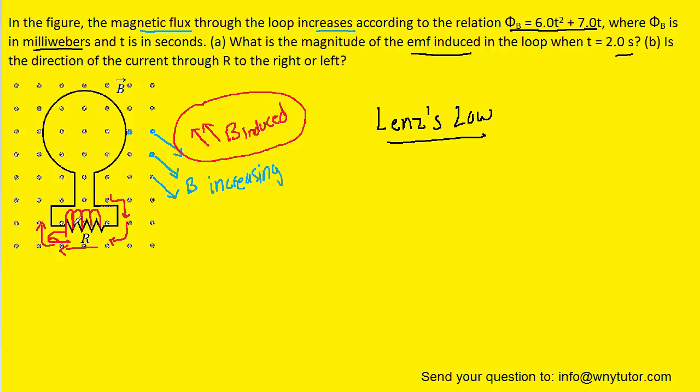So you grab that loop of wire. Your thumb points to the right naturally. And therefore, the current is flowing to the right. So the correct answer for the direction of the current through this resistor is from right to left. And maybe a more simple way of saying that is to the left. So the final answer to part B would be to the left for the current that's flowing through the resistor R.